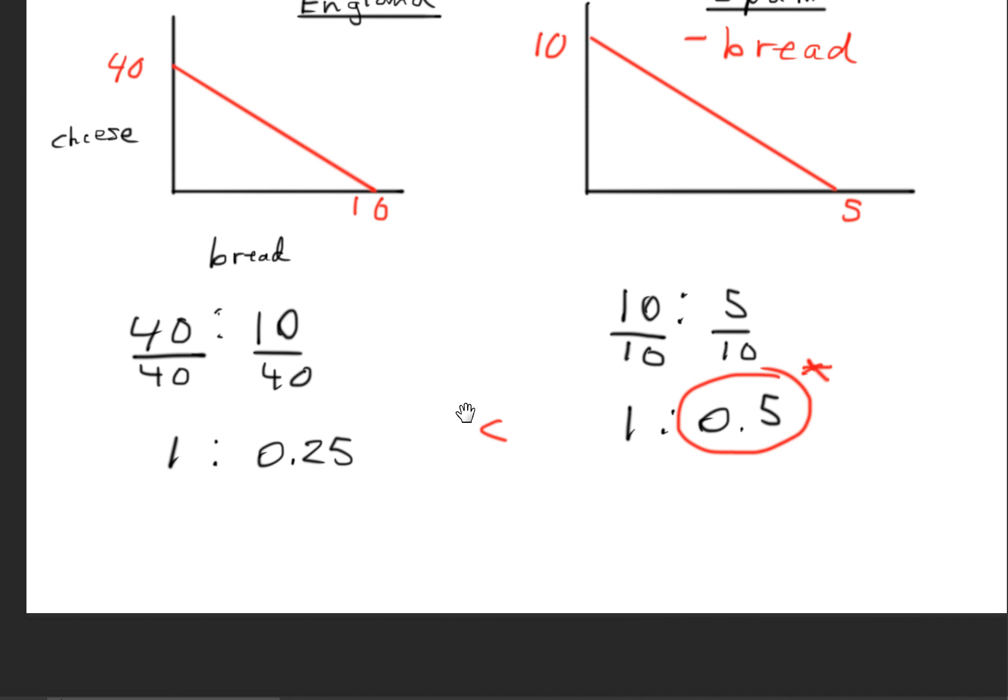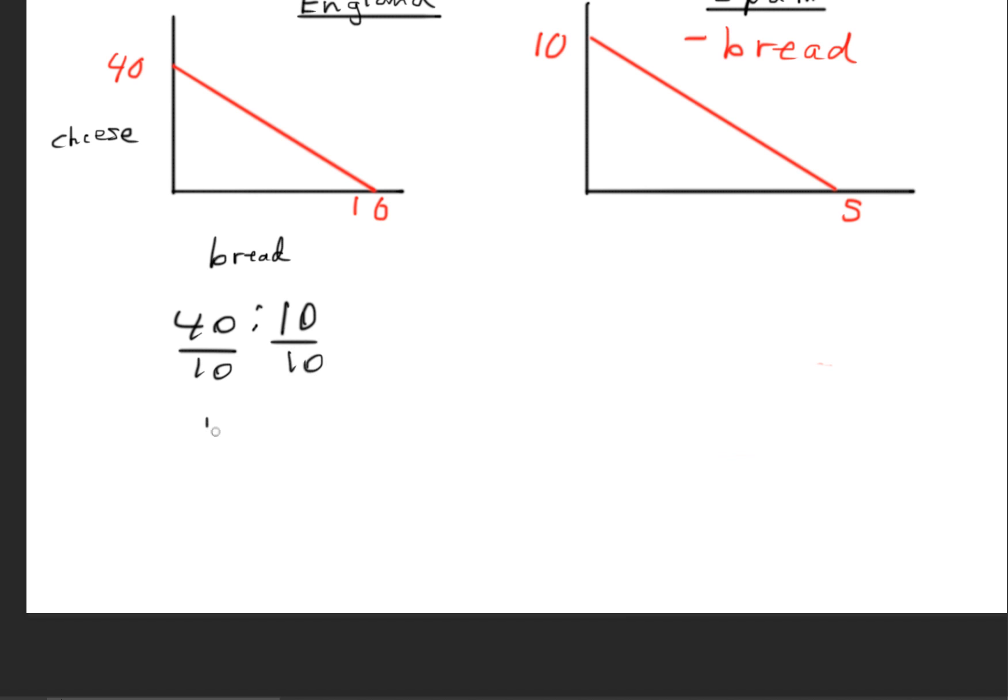Now we'll go ahead and do the same process for cheese. So once again, we set up our ratios: 40 to 10. This time we're going to divide 10 on both sides. So this gives us 4 to 1. And this time, we divide 5 on both sides.